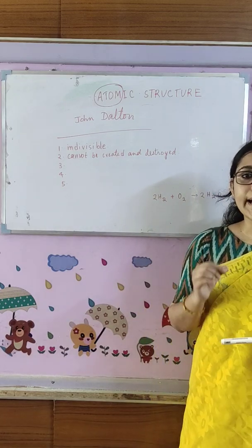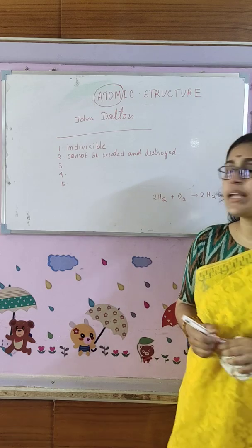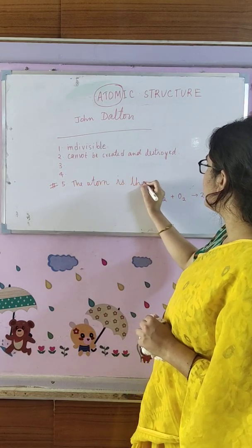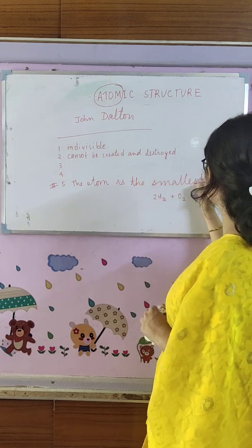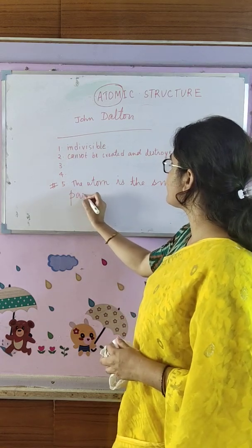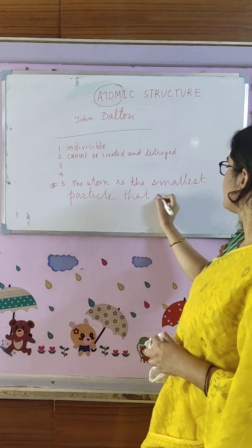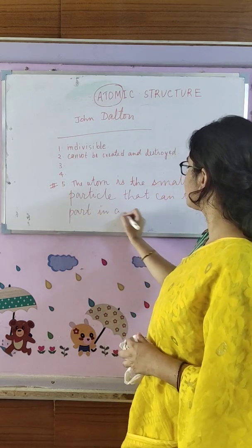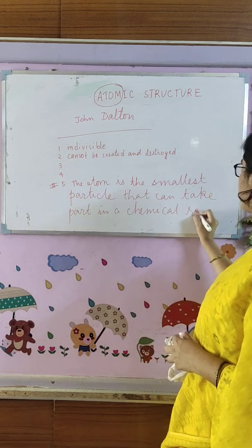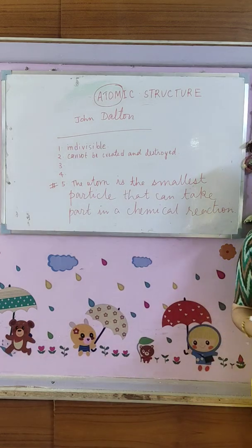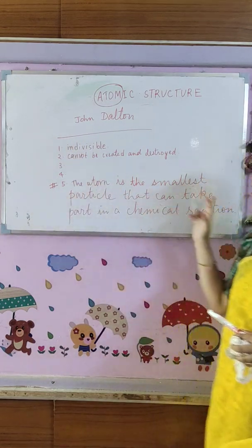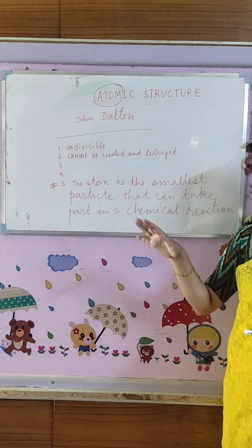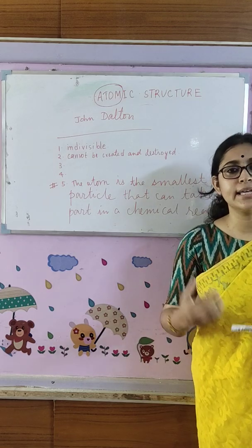And what is point number five? Atom is the smallest particle that can take part in a chemical reaction independently — the most important point. Now, out of these five points, only this number five point is right, and all the four other points are wrong. Why wrong? That we will discuss later. Today, let us come to the topic — the atom and its structure. After these postulates, we will go directly into the structure of an atom.